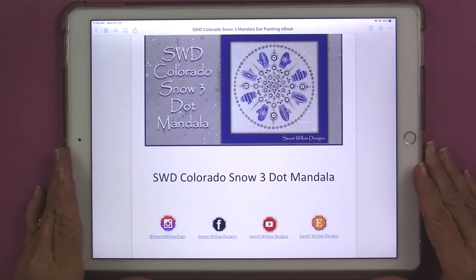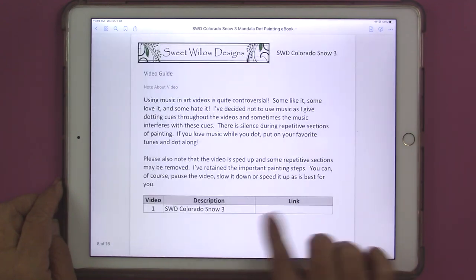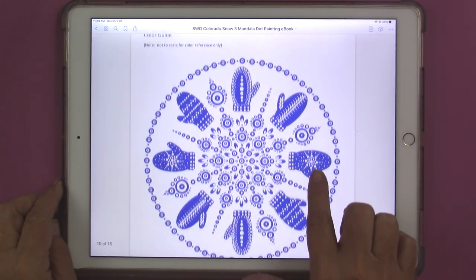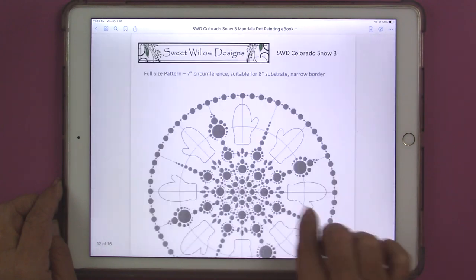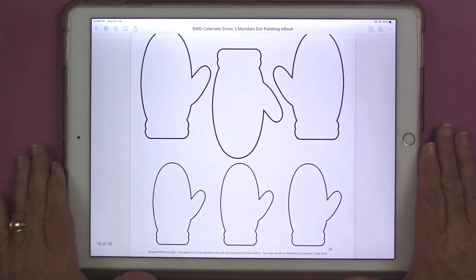This project has an e-book that's available in my Etsy shop. It's a 16-page e-book with all the colors, full-size patterns in different sizes, some mitten designs, and blank mittens for you to do your own designs.